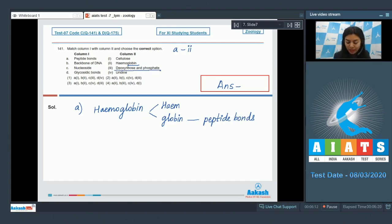is made up of deoxyribose and phosphate, so option B goes with 3. Nucleoside is formed when a nitrogenous base attaches with a sugar. In the given options in column 2, uridine is a nucleoside, formed when uracil combines with ribose sugar.